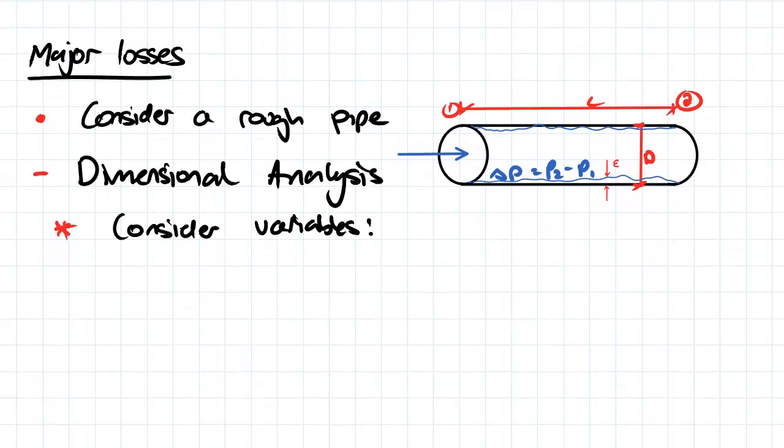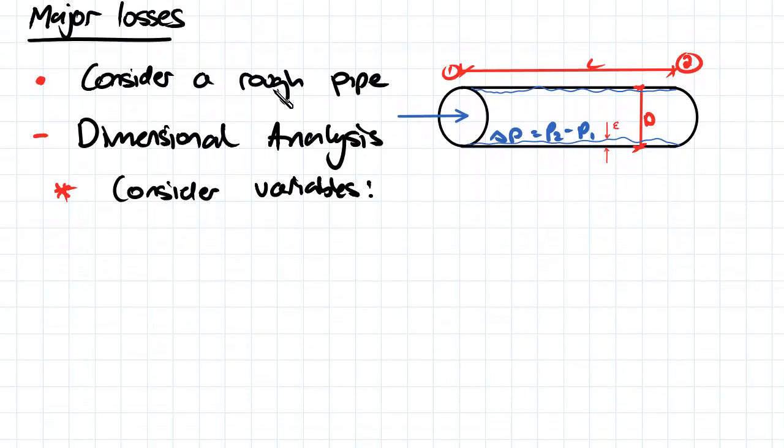So major losses, we need to consider a rough pipe. For our losses due to laminar flow, it doesn't matter the roughness of the pipe, it's completely independent of that. But we want to take into account both cases, so we're going to consider a rough pipe.